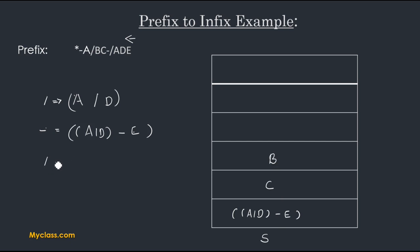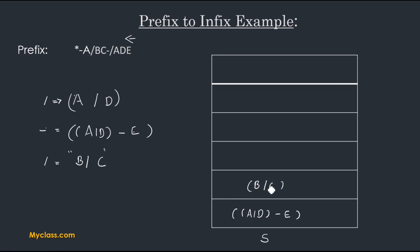Now a division operator arrives. We pop B, then we pop C, and make a string 'B / C'. After popping, only one element remains in the stack. We push this new string 'B / C' into our stack.